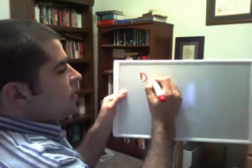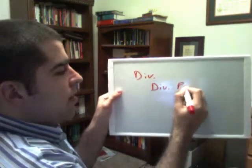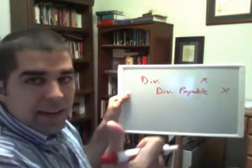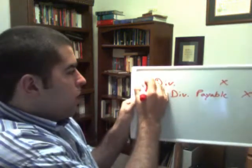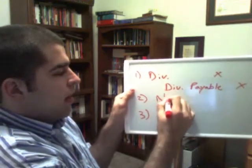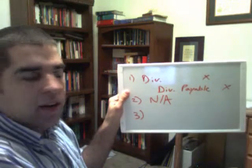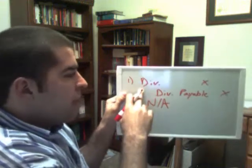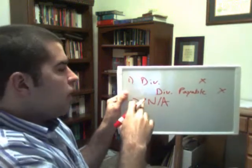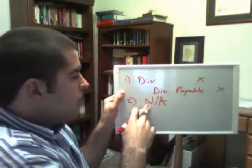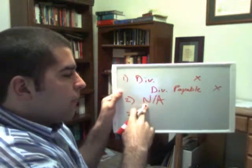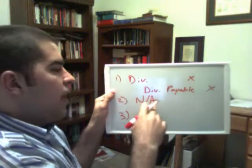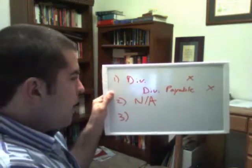On the declaration date, we debit dividends and credit dividends payable for the total amount of the dividend. The second date is the date of record — there is no journal entry on this date. What it does is pick a date on the calendar and say the stockholders as of this date are going to receive the dividend. For example, declared on January 10th, with stockholders of record on January 20th being authorized to receive the dividend. It doesn't pay them on that date — it just records who is authorized.